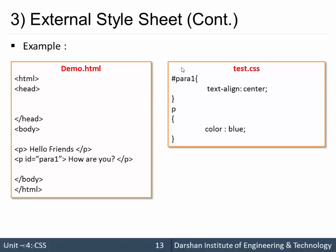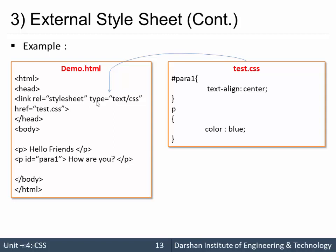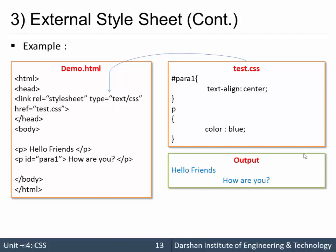To link these files I use a link tag inside the HTML. I specify rel equal to stylesheet, which indicates the relationship between the files. The type of the file is text/css, and href is the path to the CSS file. Since demo.html and test.css are in the same folder, a relative path works and the output is applied correctly.